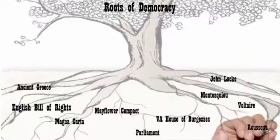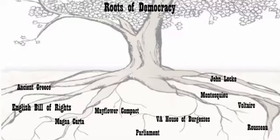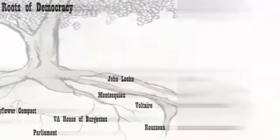Finally, Rousseau published the Social Contract, which said that the basis of government is a contract in which the people give up their individual rights to the general will — the will of the majority.